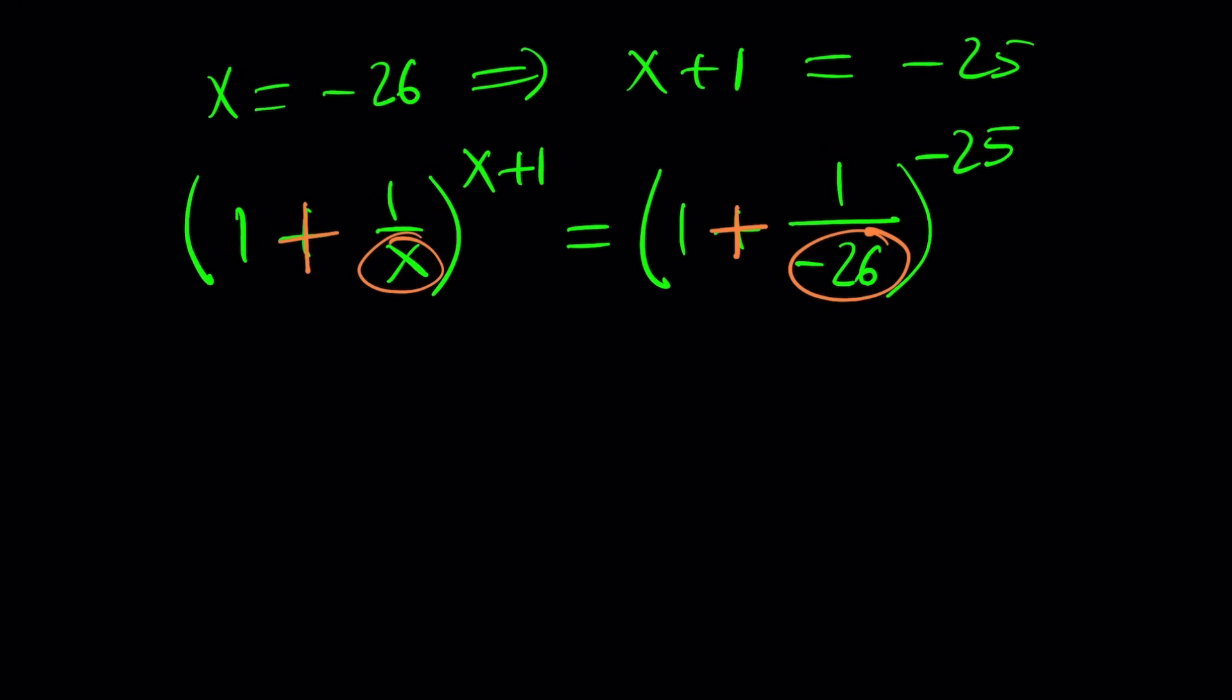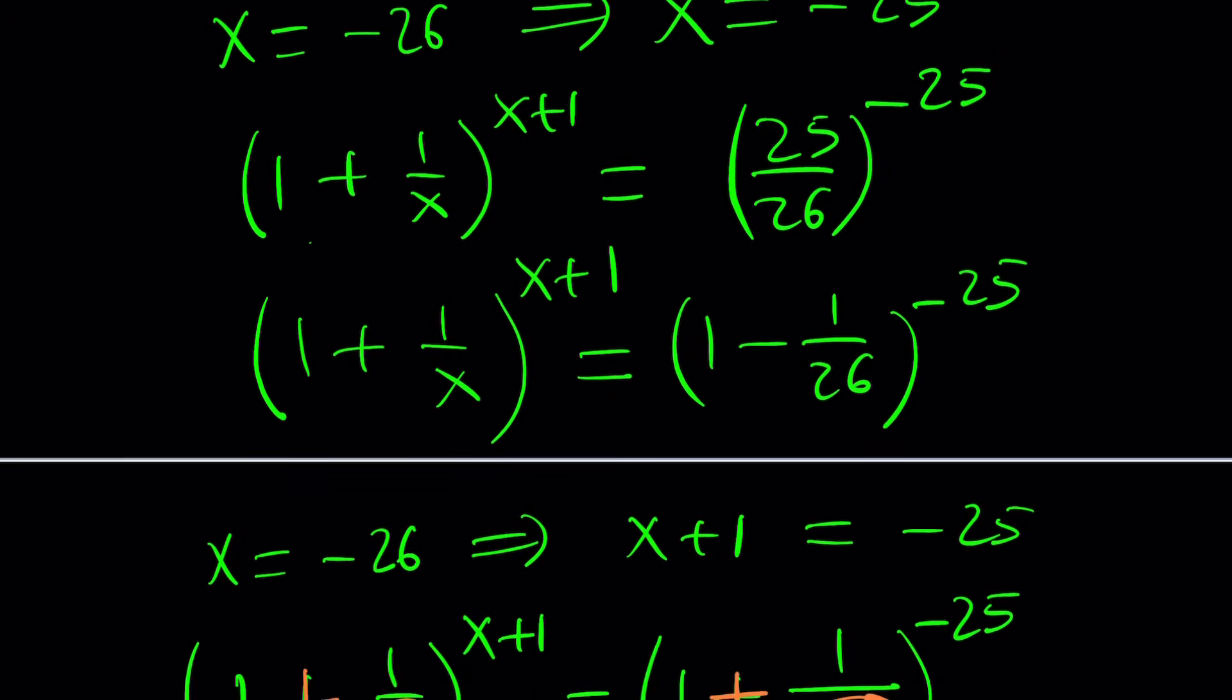And guess what? If x equals negative 26, then this works, which means we have a solution. Which means x equals negative 26 is a solution. Right? Okay. Yeah, and you can definitely check that, too, with the original problem.